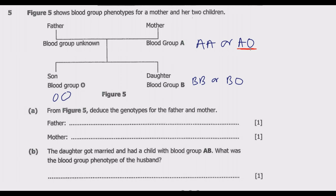This means the mother can only be AO — for her to donate O to the son. For the daughter's blood group B, it's either BB or BO. But because one A came from the mother, the mother must be AO. This means the daughter could have BO, meaning the B came from the father.